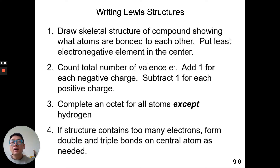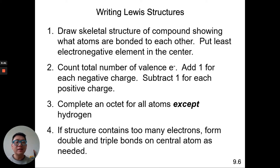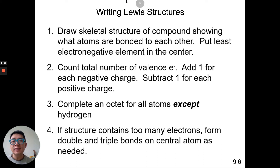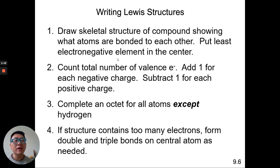First, we draw a skeleton structure of a compound showing what atoms are bonded to each other, and we put the least electronegative element in the center. The technical rule is the least electronegative element goes in the center. Reminder: electronegativity increases up and to the right on the periodic table.